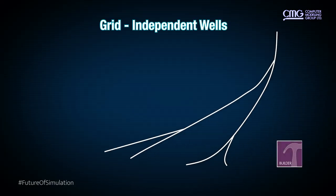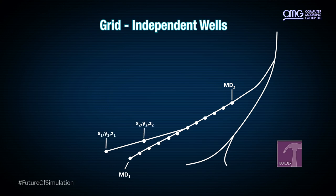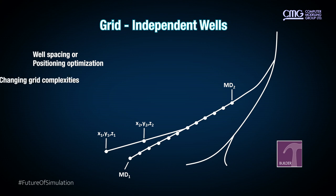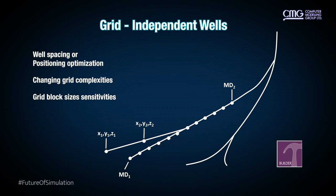Now, in the new feature, well perforations are defined by starting MDs and ending MDs — that's your measured depths. If you define these two, the simulator will automatically define the perforation between those two points. Alternatively, you can also define your perforations by the XYZ coordinates of the individual perforations themselves. This new feature is very useful for studies that involve well spacing or well positioning, changing complexities of the grid, different grid size sensitivities, and grid refinements — all without having to redefine and re-update the wells.